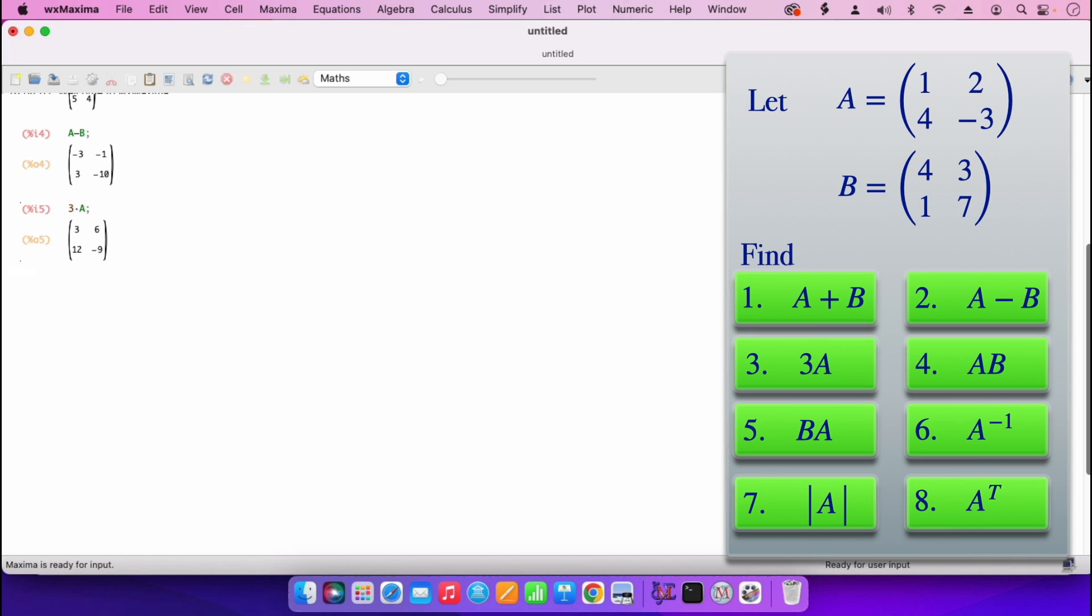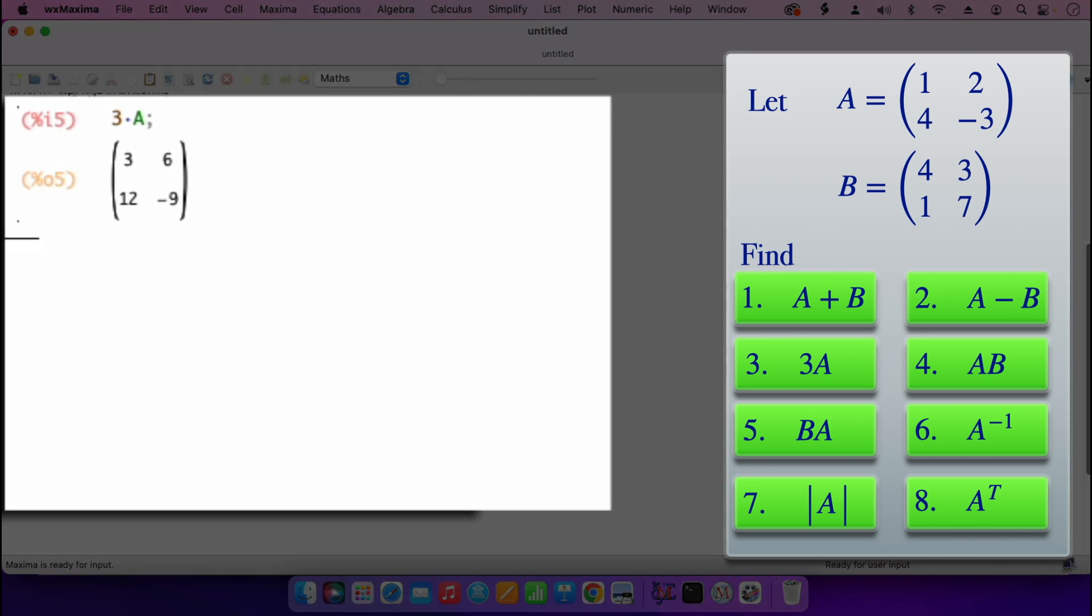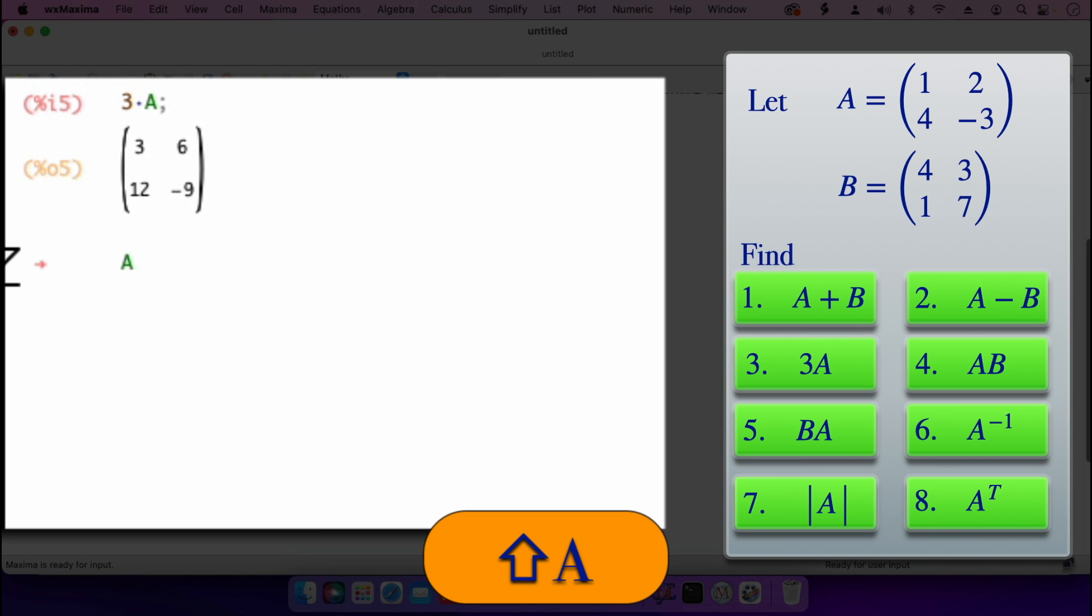And then on question number four, A times B. For matrix multiplication, we use the dot, the one that we use as a full stop. So it's A, and then the dot, the full stop, then B. This gives us matrix multiplication, the row by column, and I'll press shift enter.